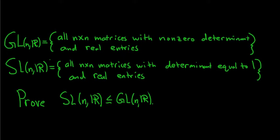In this problem we have two sets. The first set is GL_n(R), called the General Linear Group. It's the set of all n by n matrices with non-zero determinant and real entries. You can also say it's the set of all n by n invertible matrices with real entries. We could have easily replaced the set of real numbers with the set of complex numbers and nothing here would change.